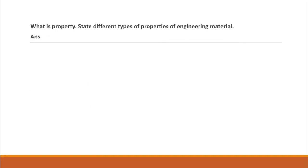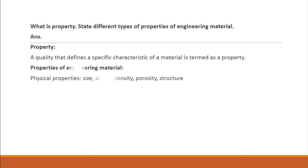Next question is what is property and state different types of properties in engineering materials. Property is a quality that defines a specific characteristic of a material. Properties of engineering material include physical properties such as size, shape, density, porosity, and structure.